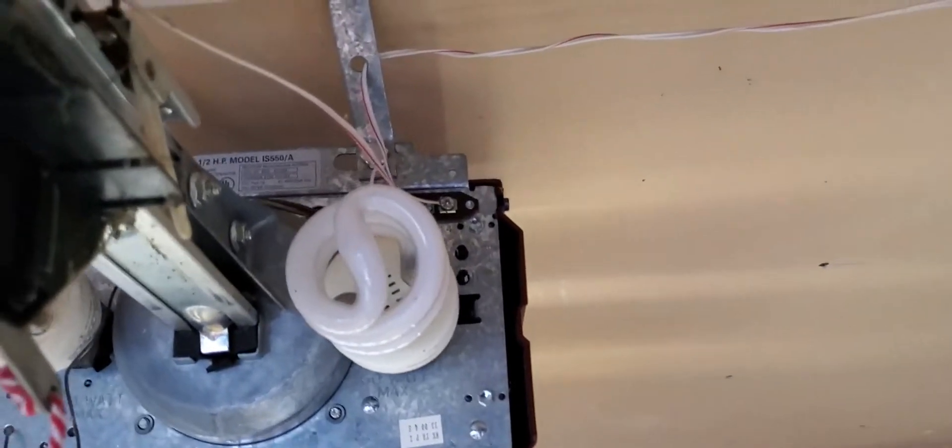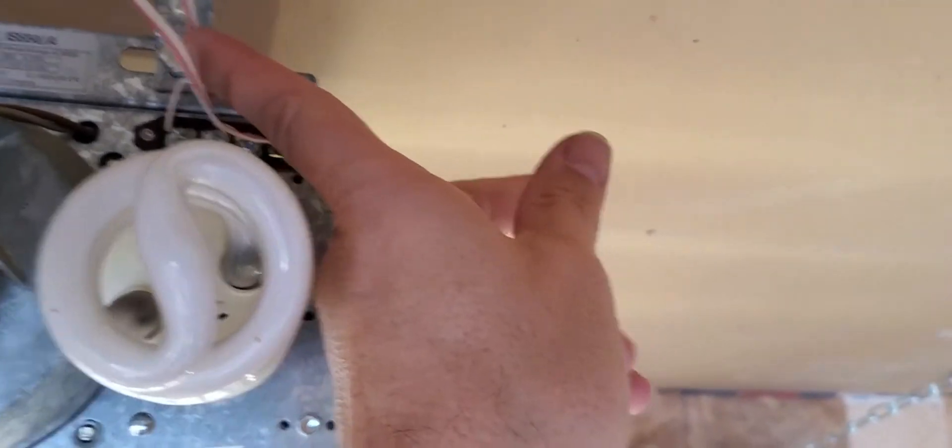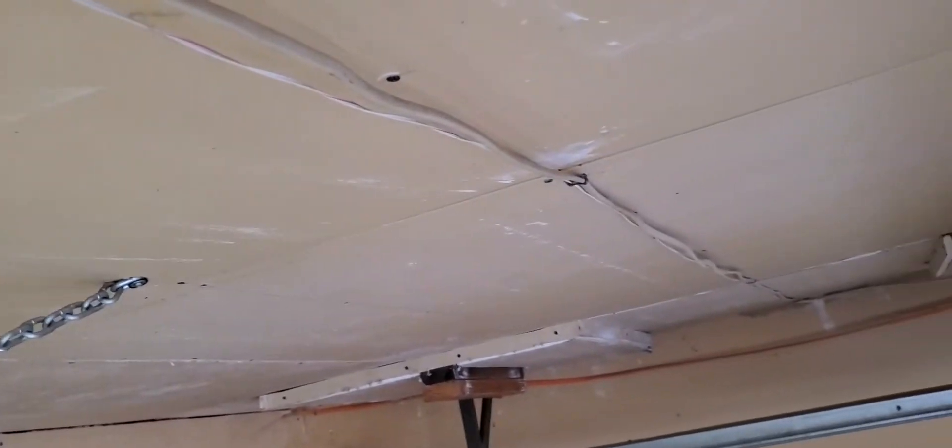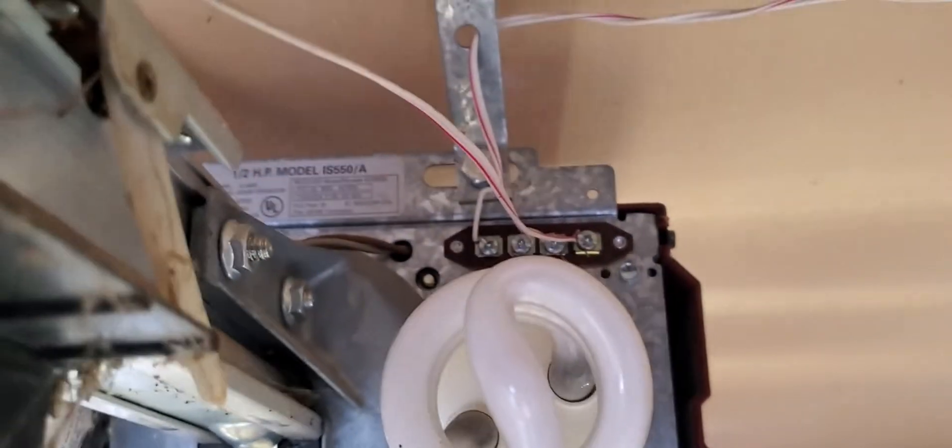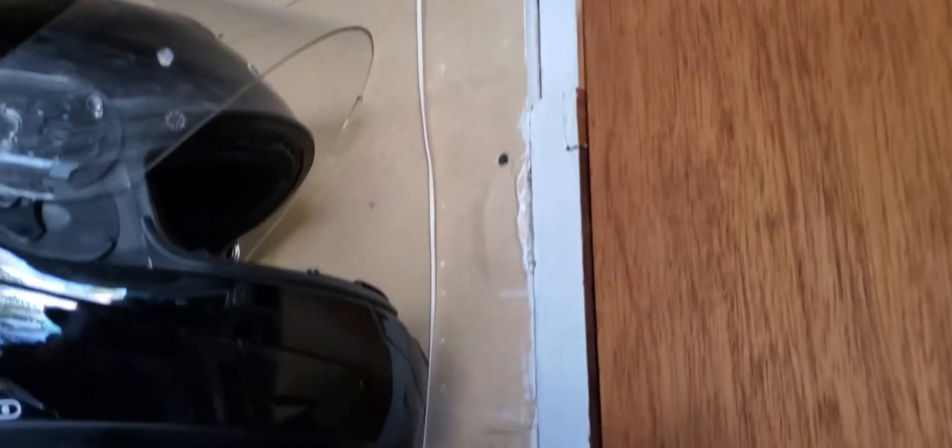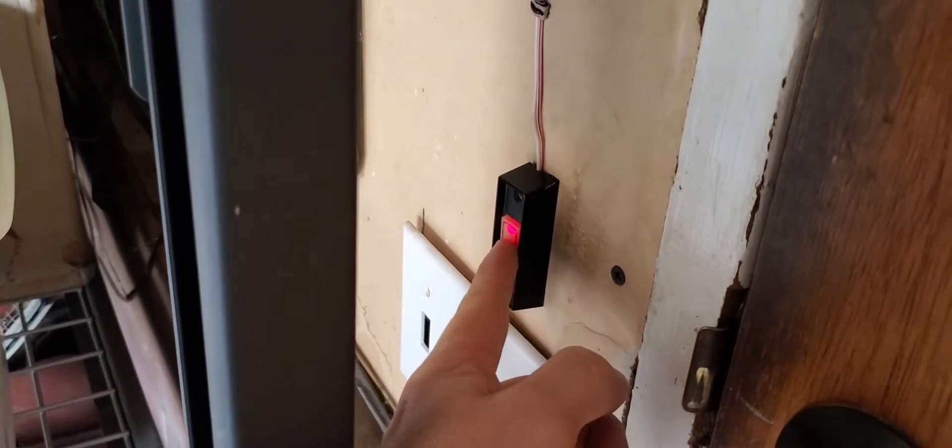The first step is to determine what type of garage door opener you have. This garage door opener has a wire that leads over to a switch on the wall. That is a pretty solid indicator that this is just a regular momentary switch that can trigger the door. If you short those two screws on the garage door opener it should perform the same action as pushing this button here.